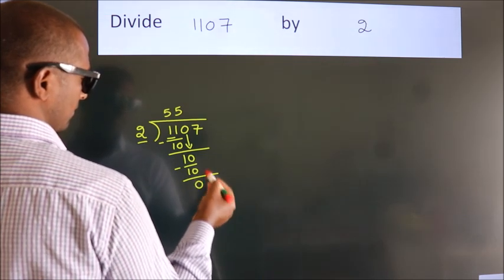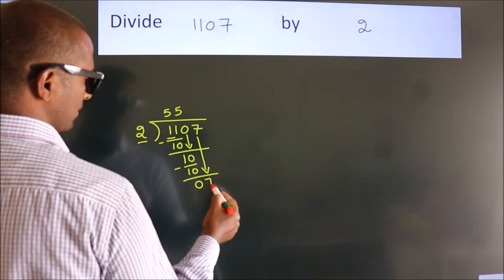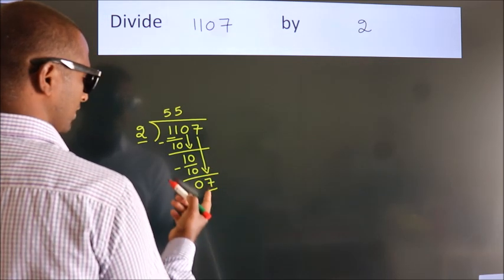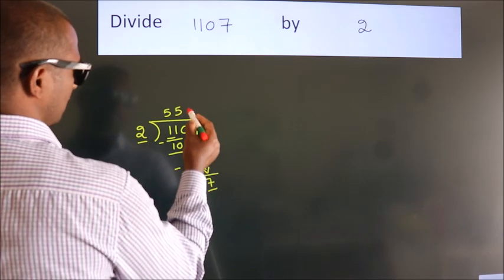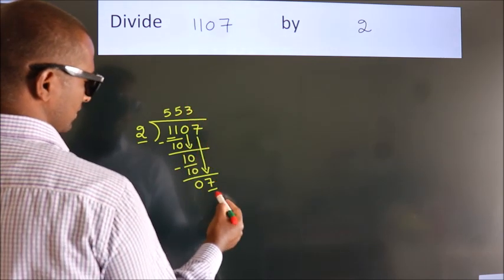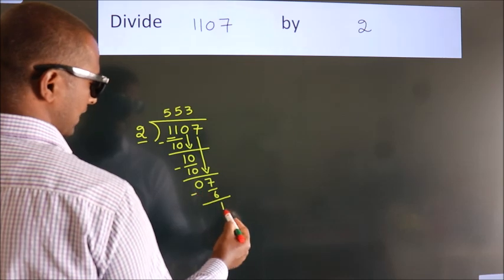After this, bring down the beside number. So 7 down. So 7. A number close to 7 in 2 table is 2 times 3 equals 6. Now we subtract. We get 1.